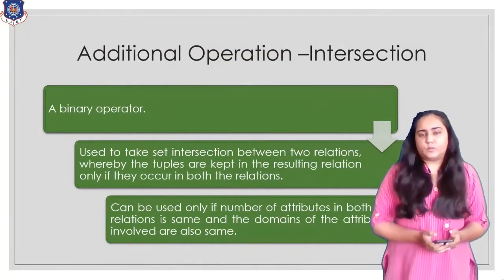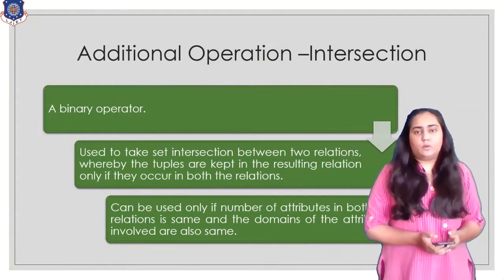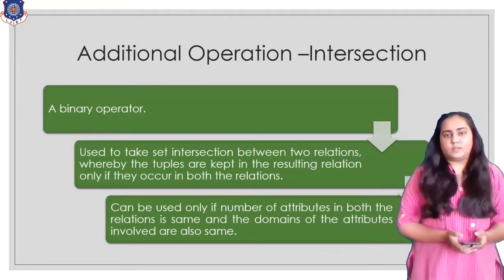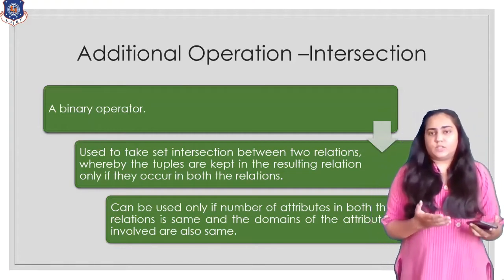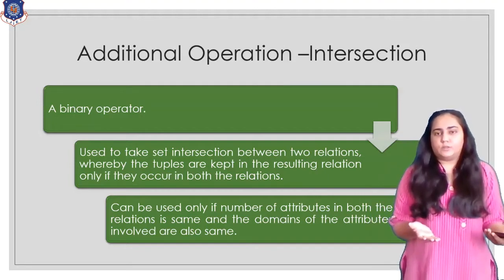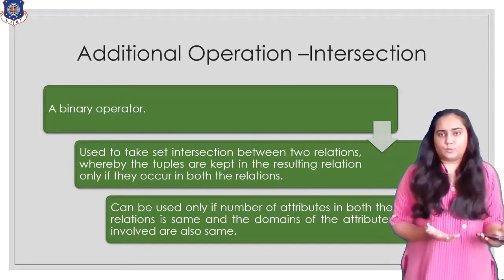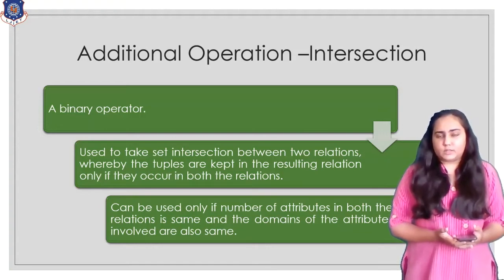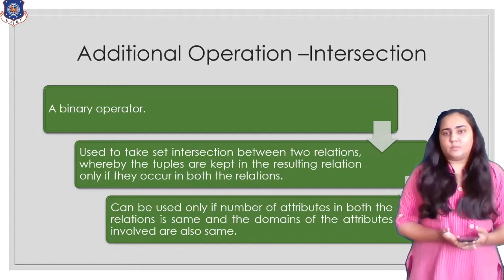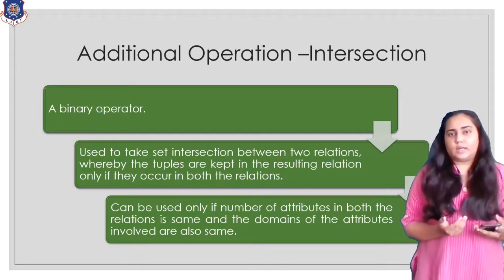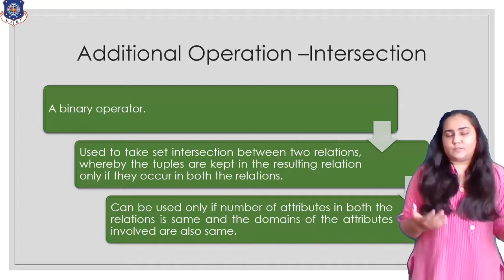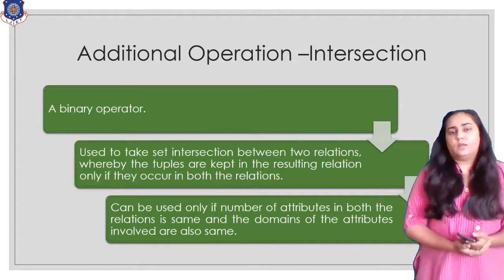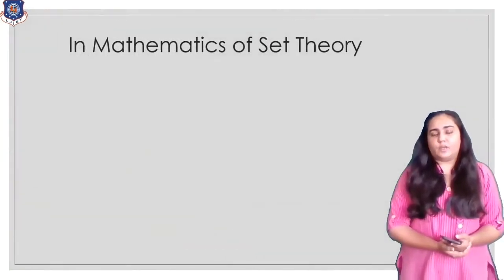The first additional operation we are going to see is intersection, which is another binary operator like union and set difference. It is used to take an intersection between two relations, so only what is common between the two will be kept — everything else will be eliminated. It has the same condition as union and set difference: both tables should have the same number of columns and their domains should be the same. Let's see an example with numbers.